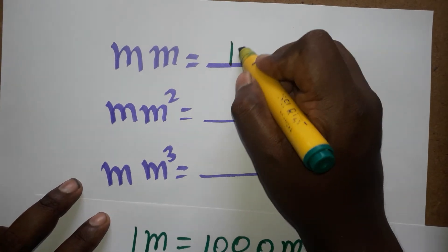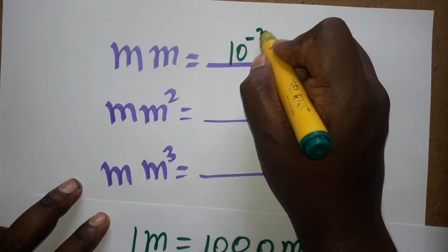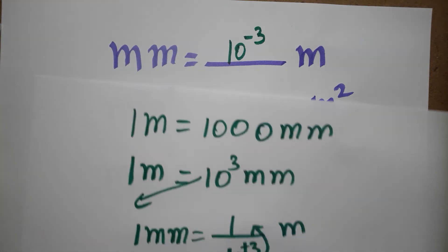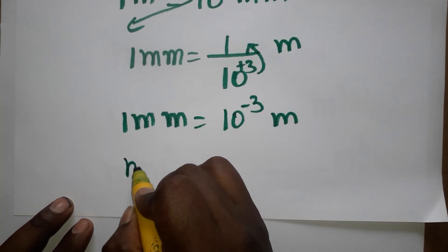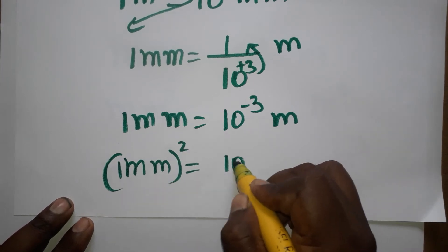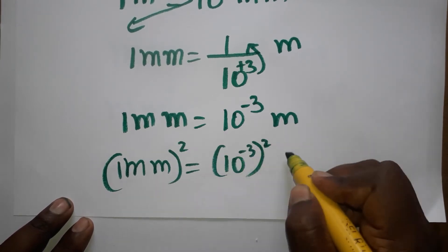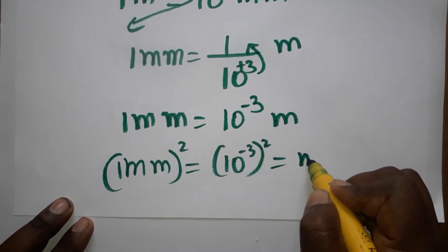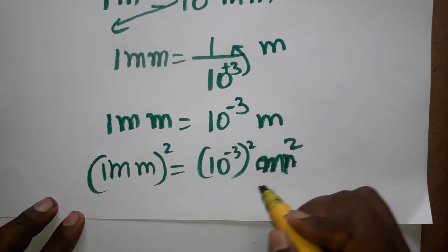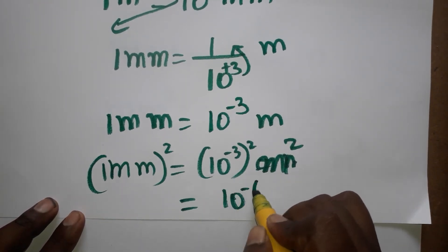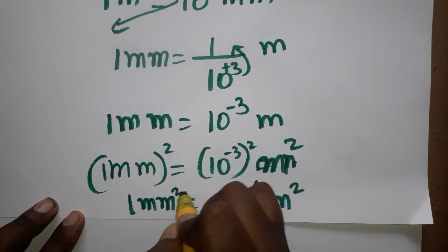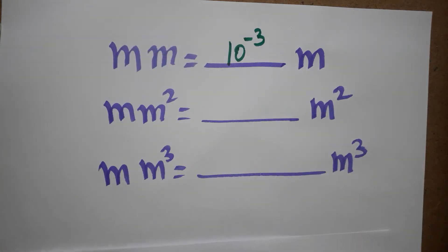The second thing: millimeter square is equal to how many meter square? You can directly square the millimeter conversion factor. So millimeter square equals 10 power minus 3 whole square meter square. Therefore 10 power minus 3 whole square gives us 10 power minus 6 meter square. So one millimeter square is equal to 10 power minus 6 meter square.